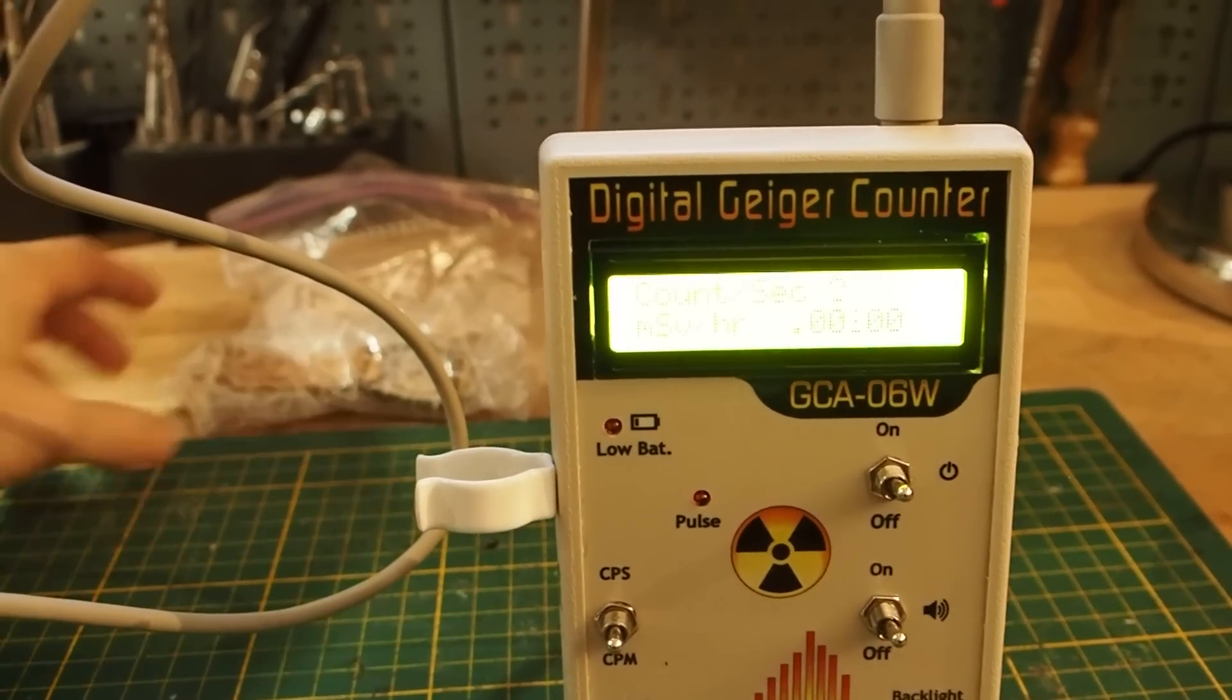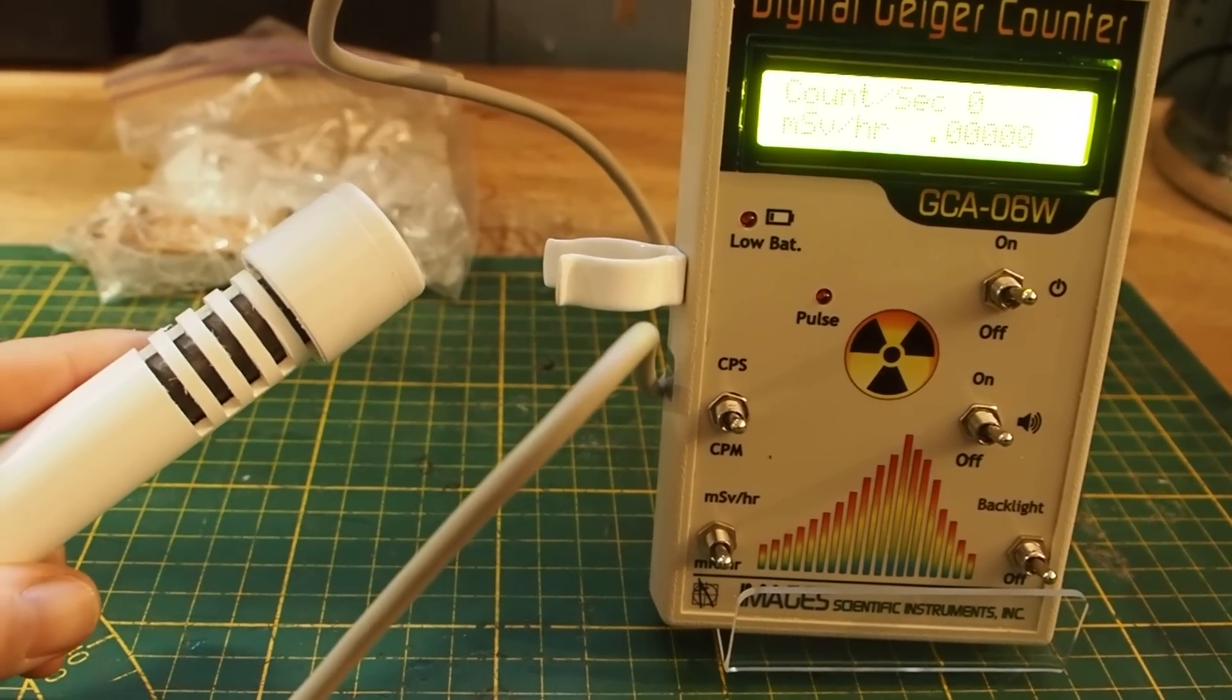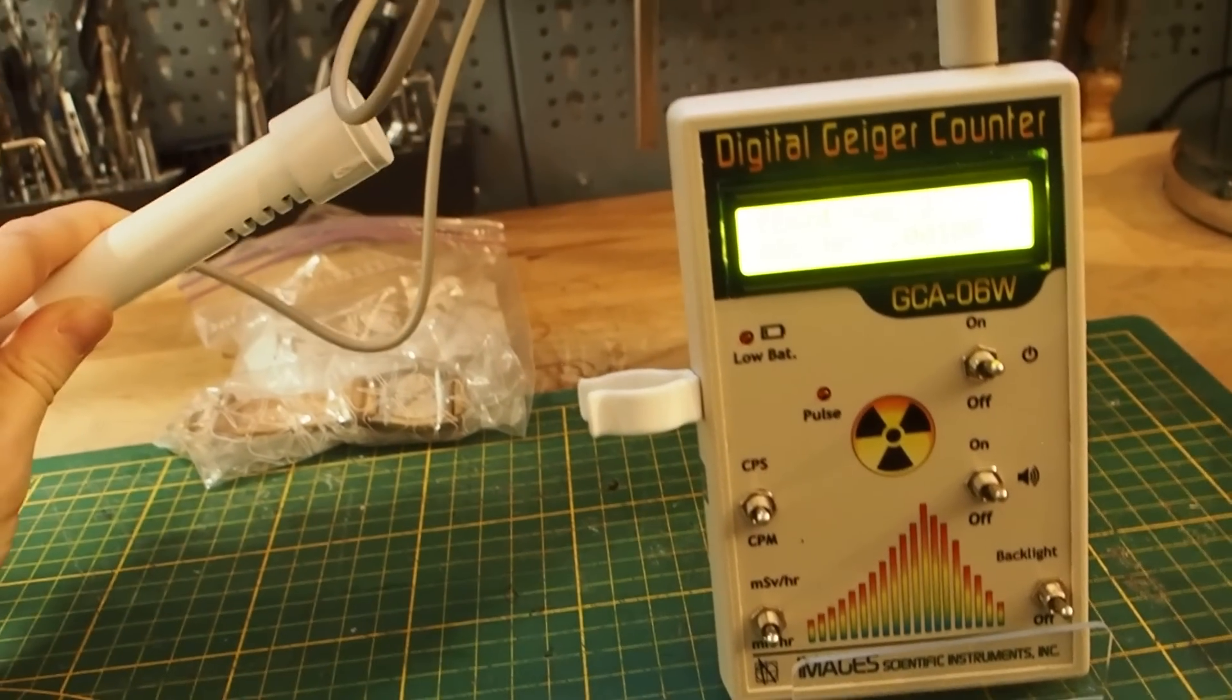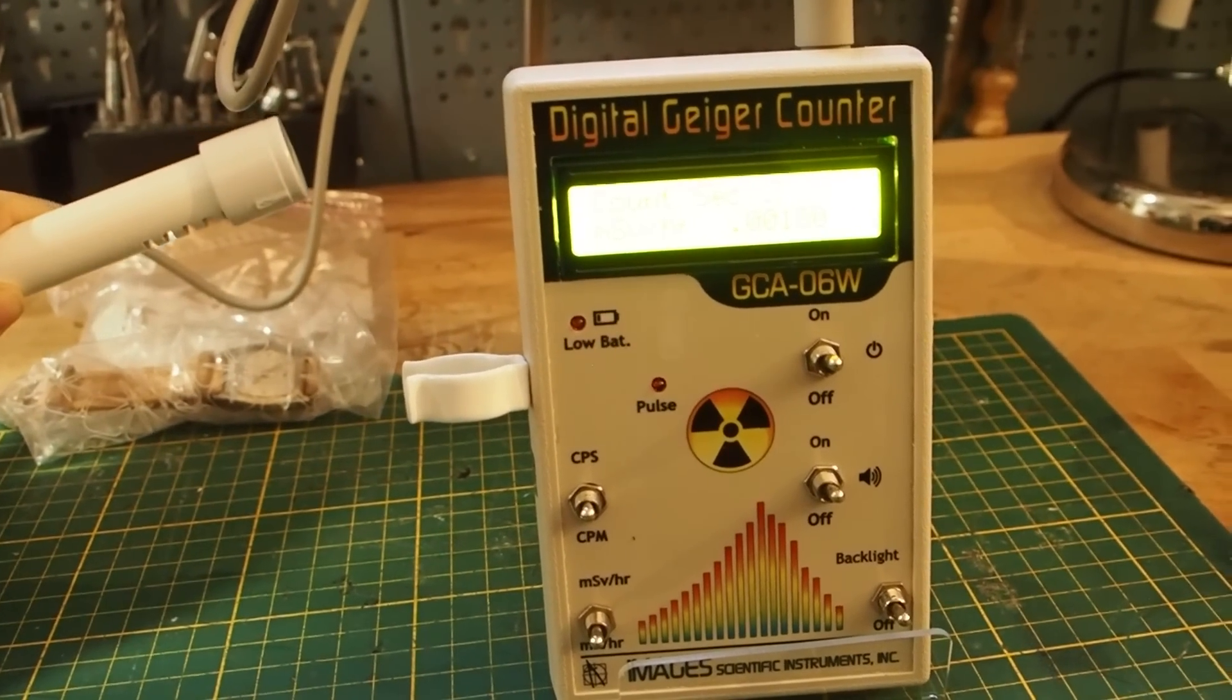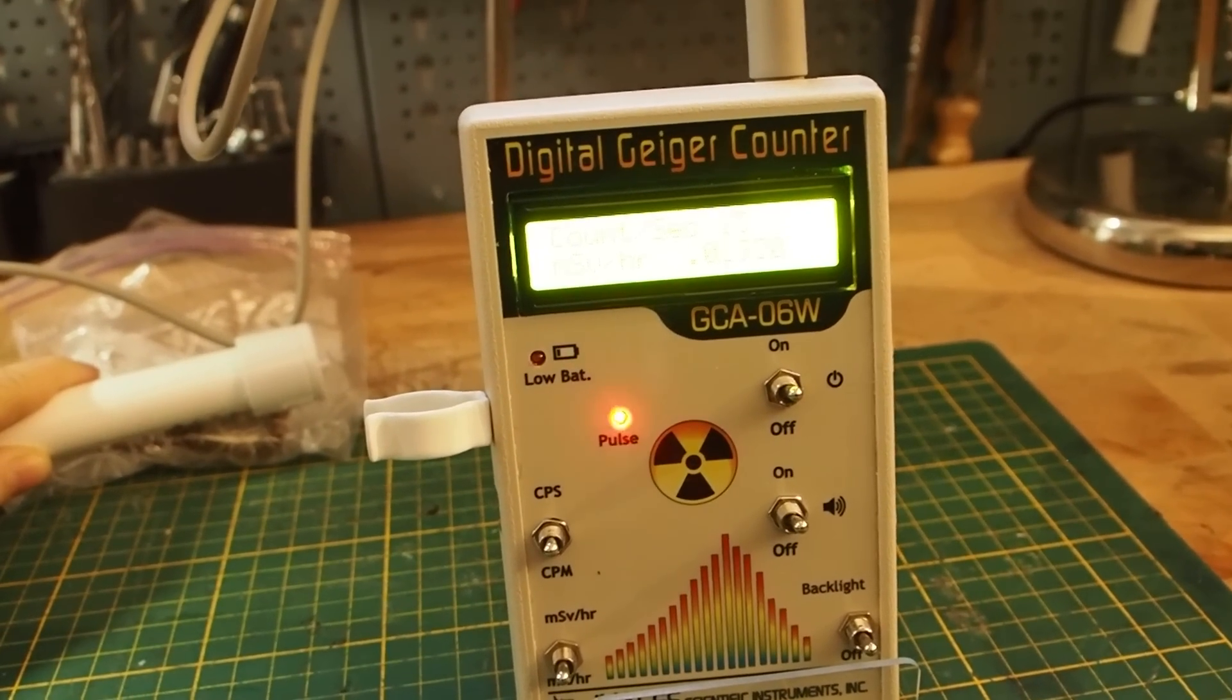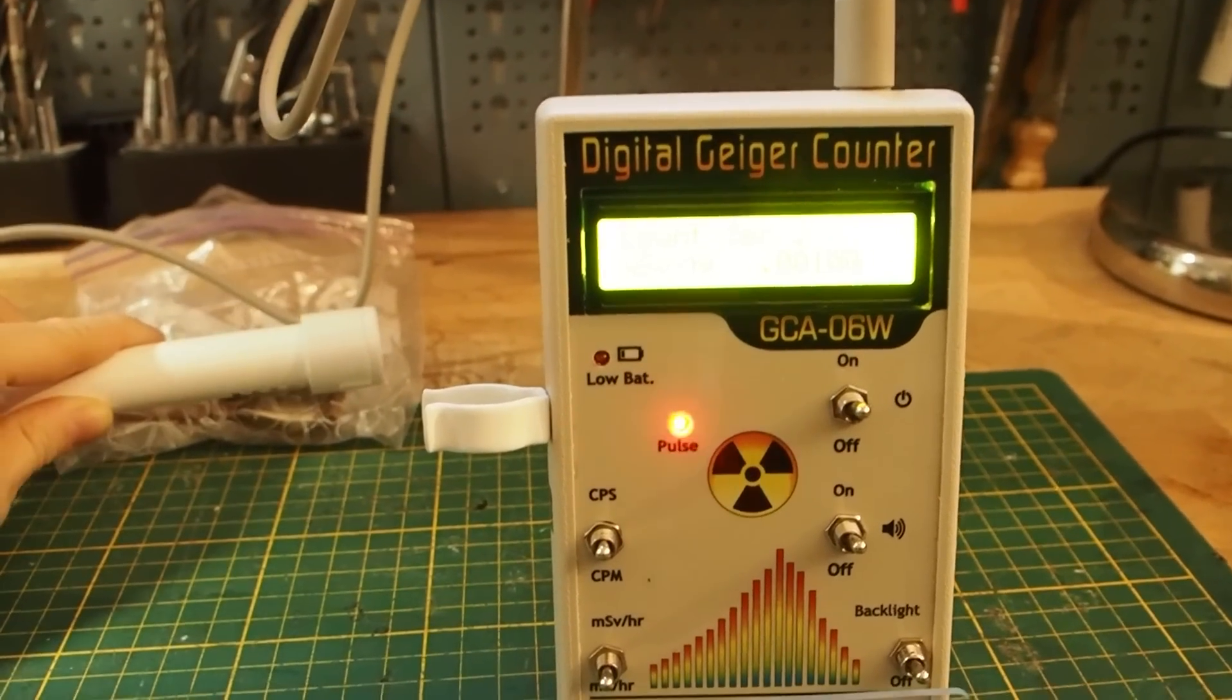Alright so now I have dimmed the light a little bit so you can see the LCD screen better and first we are going to measure beta and gamma radiation through the side here through the louvers. Also I want to see how fast the Geiger counter is reacting because some Geiger counters they are reacting really slowly but this one seems to be reacting quite fast.